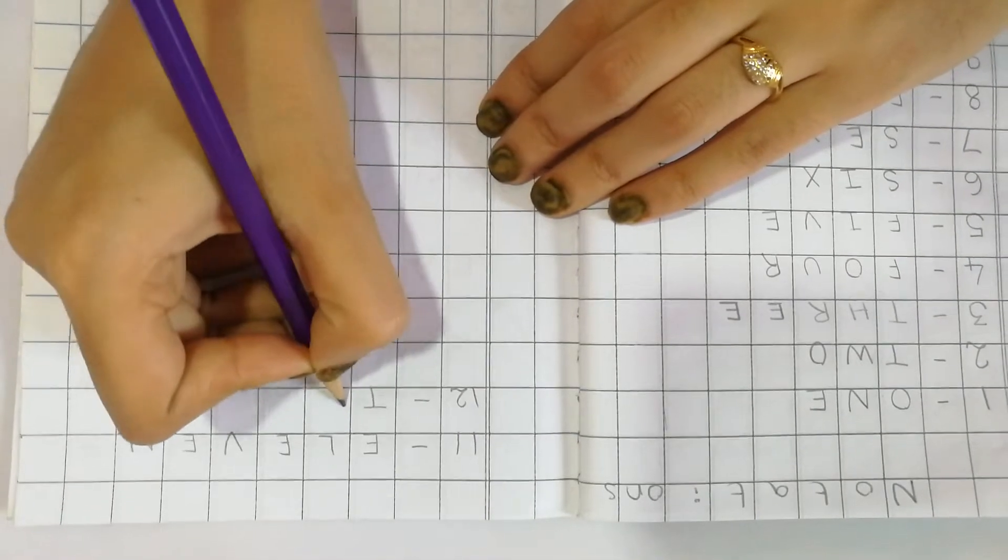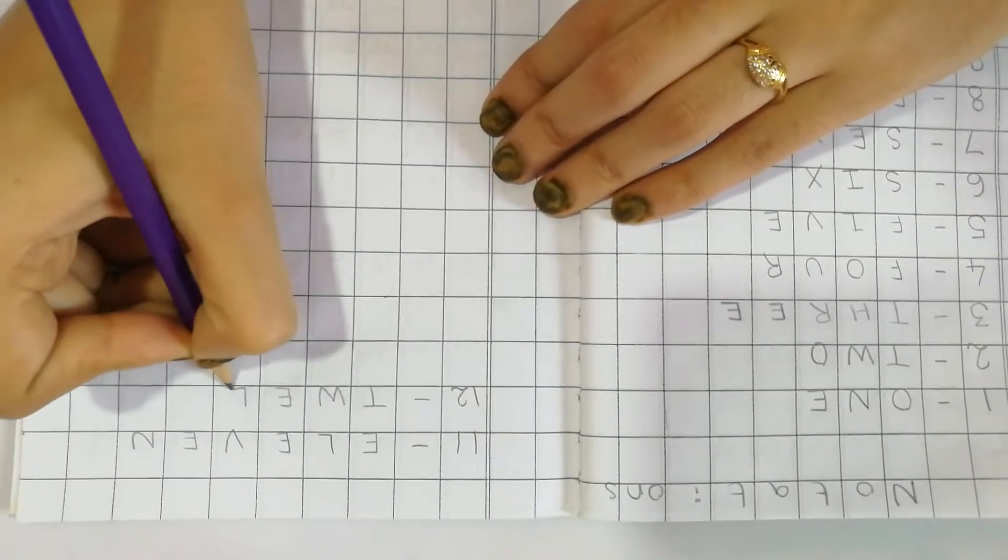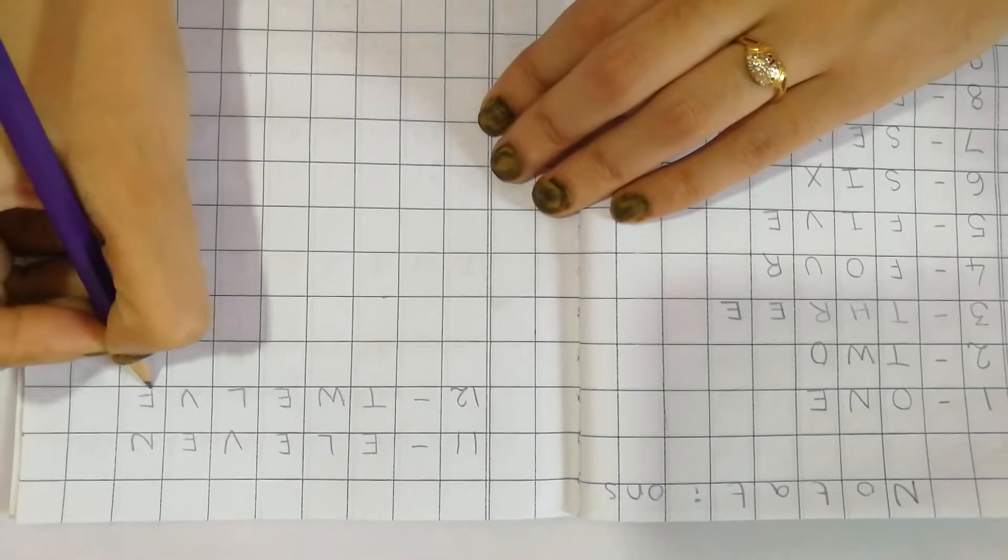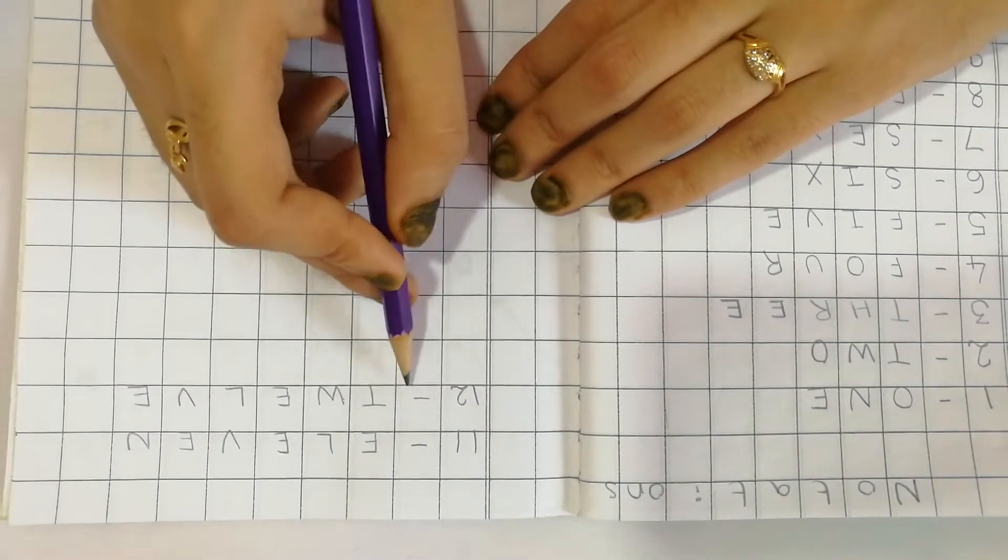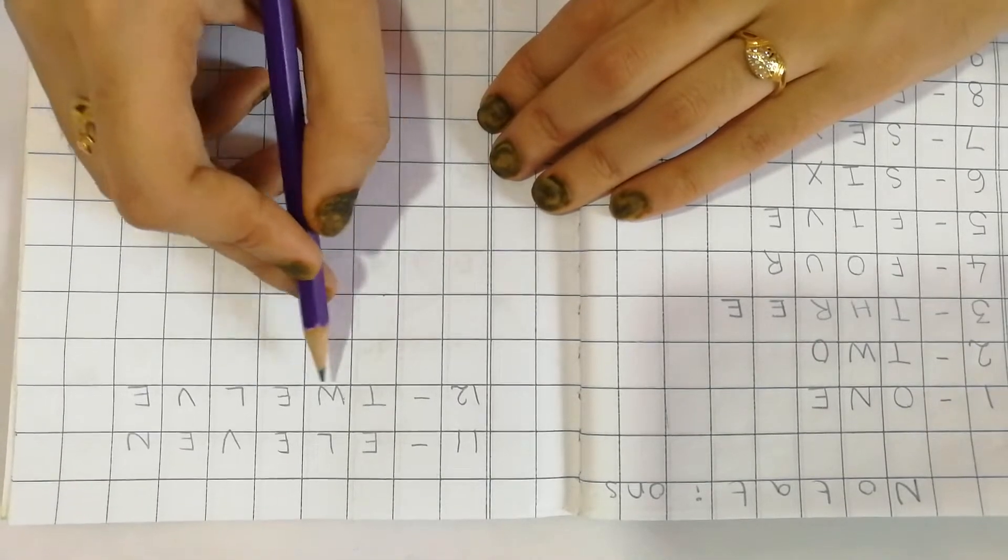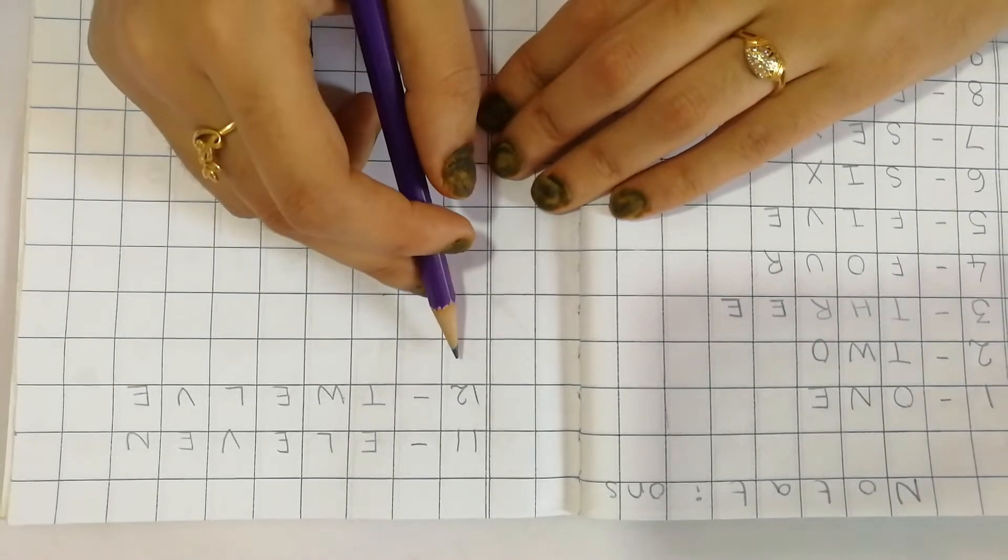T-W-E-L-V-E. 12. Repeat after me. 12 dash. T-W-E-L-V-E. 12.